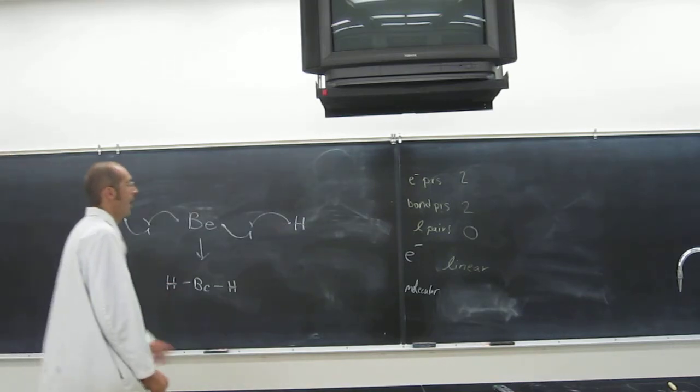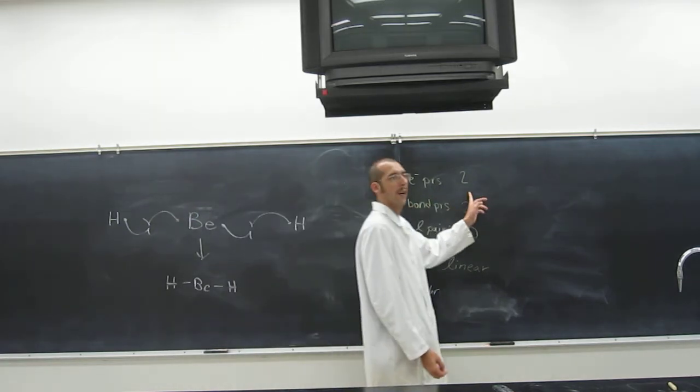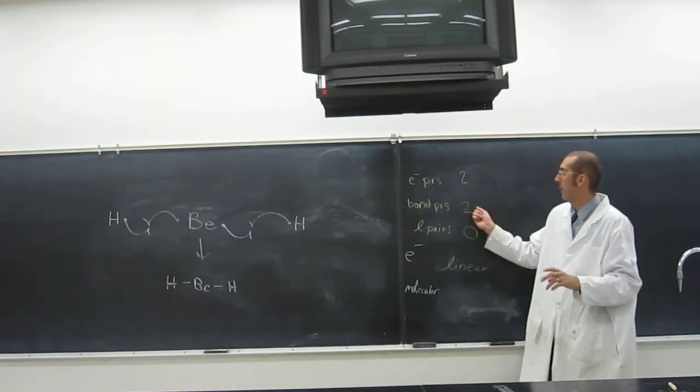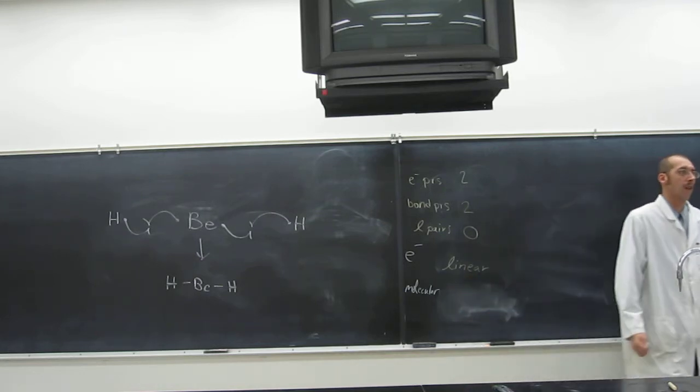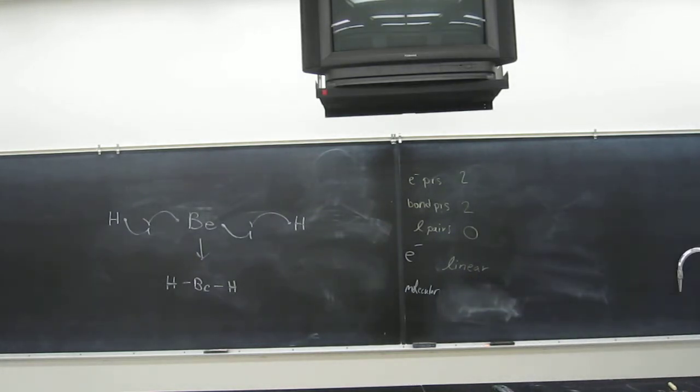So, has that got two electron pairs? Yes. Does it got two bonding pairs? Yes. No lone pairs? It's linear. What's its molecular geometry? Straight. Linear. Linear as well, right?